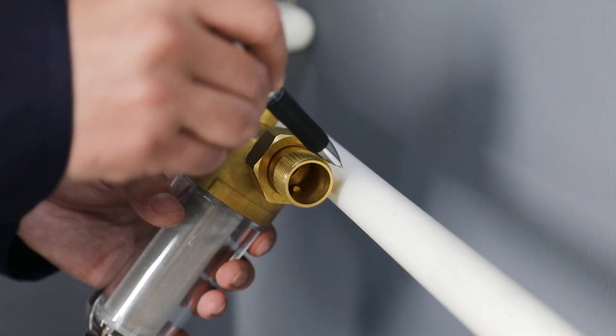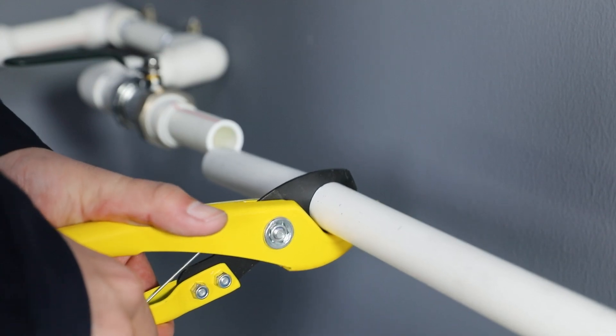Second, measure the length between the two connectors, find a suitable location, and cut the water inlet.